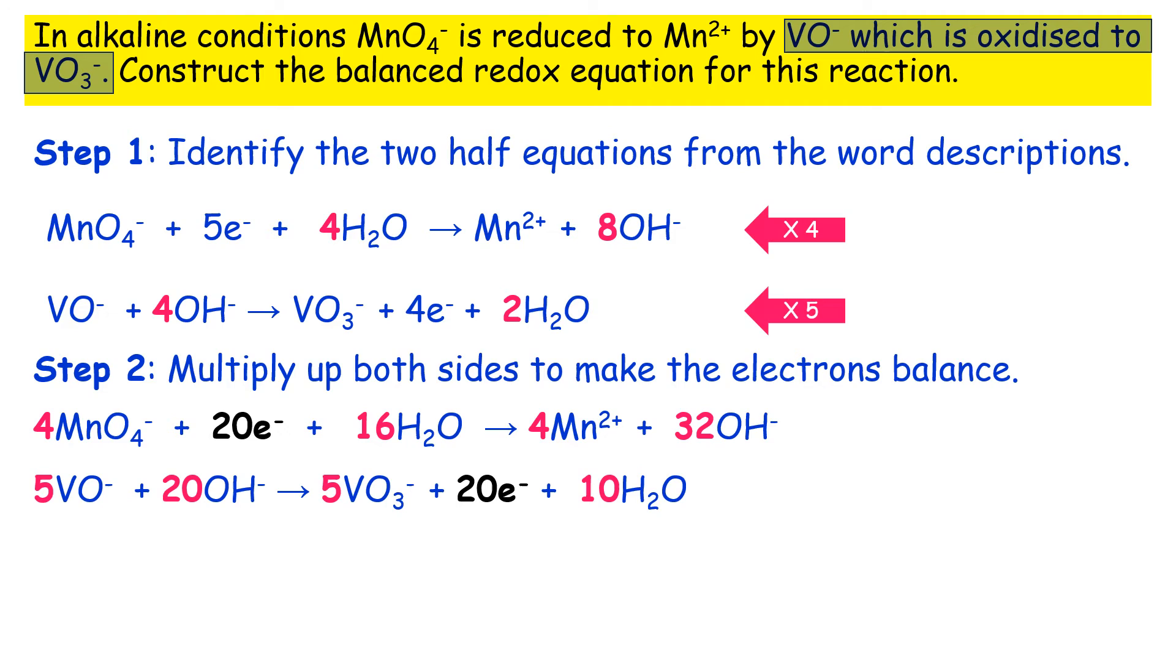So therefore by multiplying the top part by four and the bottom part by five, in other words the reduction gets multiplied by four and the oxidation gets multiplied by five, you end up with these two half equations.